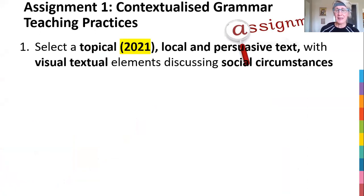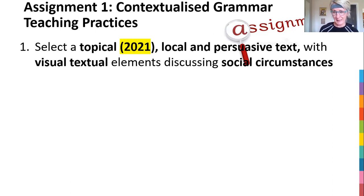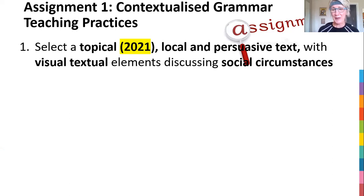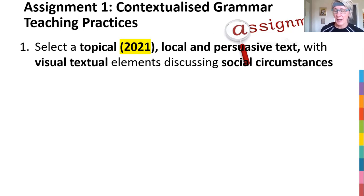There are four sections to it. The first one is that you've got to select a topical and local persuasive text, report or magazine article that's got a picture or an image or graph with it, and it's commenting on some social circumstance. You will get a mark for the selection of the article. I want it local — it must be South Africa — and I want something that's been written this year, 2021. That's going to force you to use articles and not go to past papers. It must be something that's happened in 2021 so far, it must be local, South Africa, and there must be a persuasive message. There are so many things happening that's trying to persuade the reader to be vaccinated or not be vaccinated.